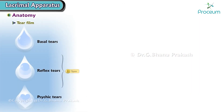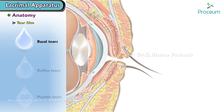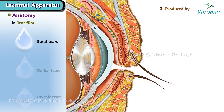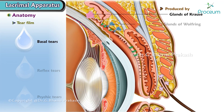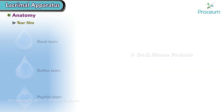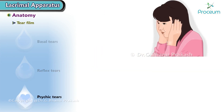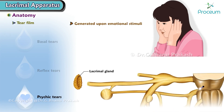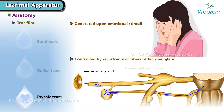Tears are largely of three types. 1. Basal tears, produced by accessory glands of Krauss and Wolfring at a rate of 1.2 microliters per minute. 2. Reflex tears, produced by the main lacrimal gland. 3. Psychic tears, as the name suggests, are generated upon emotional stimuli, controlled by secretomotor fibers of the lacrimal gland, innervated by the greater petrosal nerve — a branch of the facial nerve.